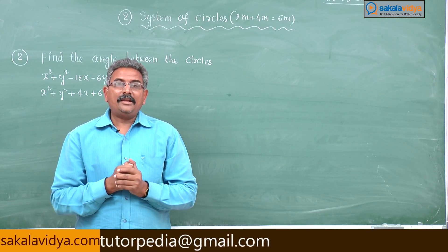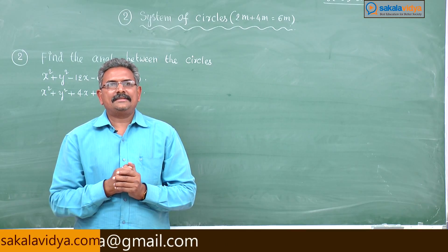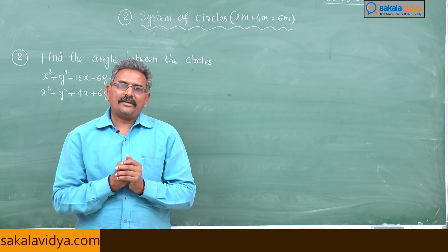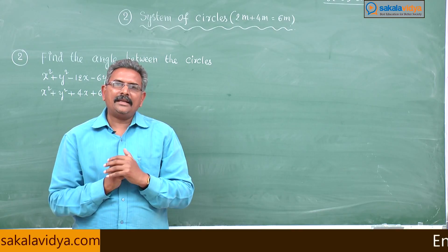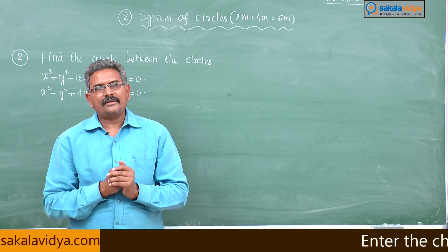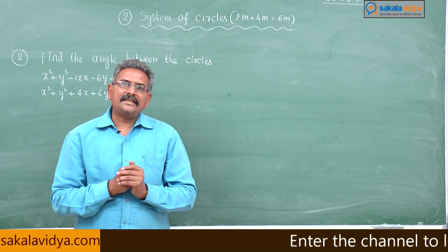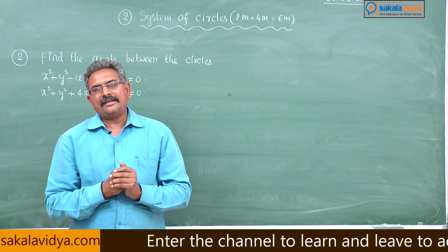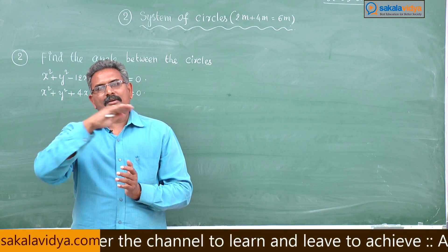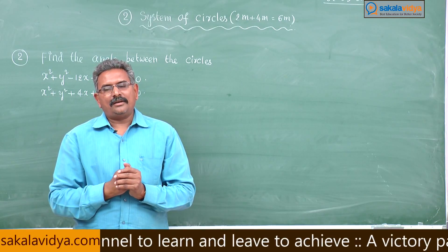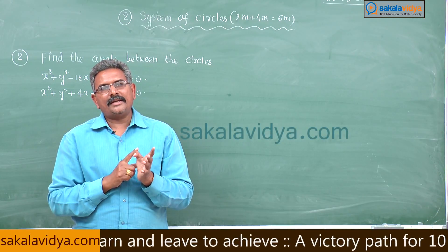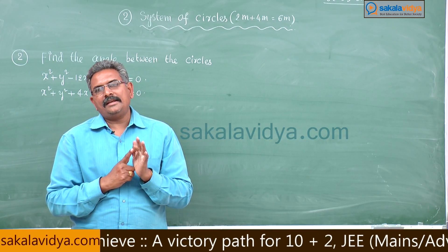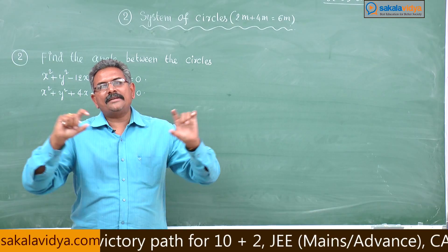How to find out the angle between the two circles? We have the formula. Let theta be the angle between the two circles, then cos theta is given by: d squared minus r1 squared minus r2 squared, divided by 2 r1 r2, where r1 is the radius of the first circle, r2 is the radius of the second circle, and d is the distance between the centers.